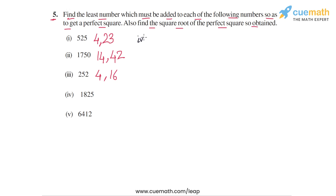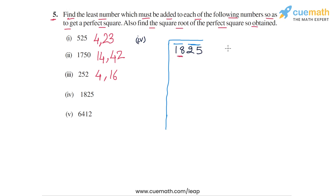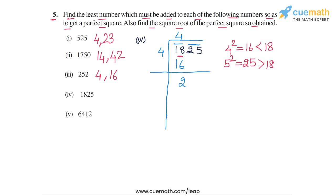Now for part 4, the number is 1825. We apply the division method, putting bars over 25 and 18. In the first step, the largest digit whose square is ≤ 18 is 4, because 4² = 16 < 18, while 5² = 25 exceeds 18. So the first divisor and quotient digit are both 4. 4 × 4 = 16. Subtracting: 18 − 16 = 2. Bringing down 25, we get 225 as the dividend for the second step.